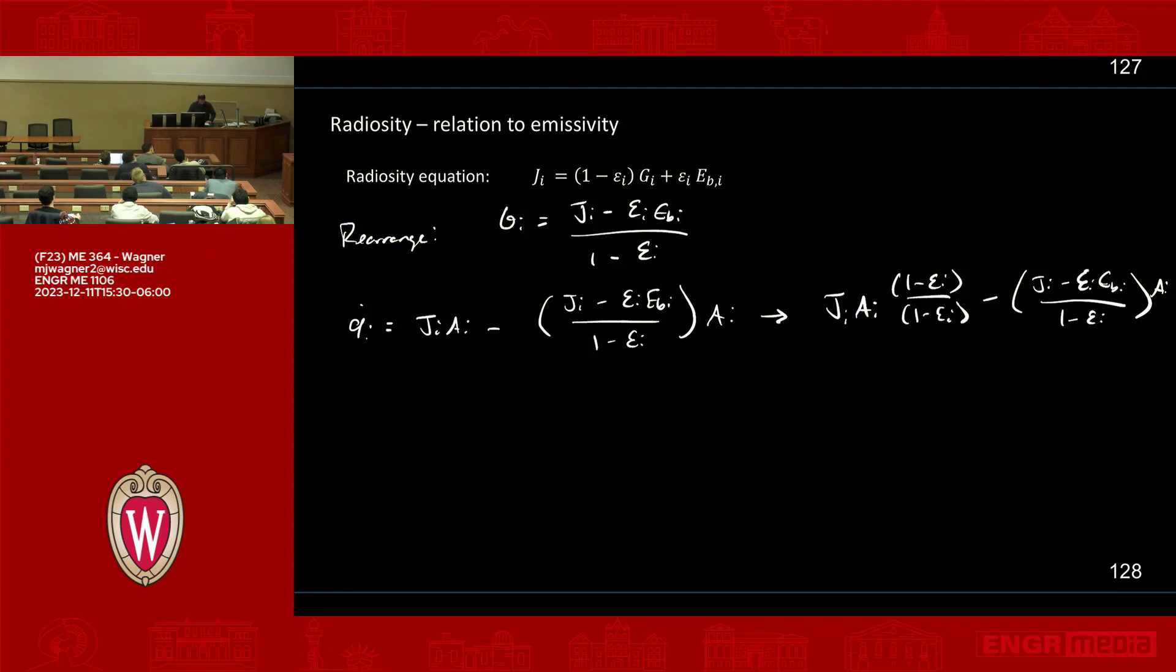And then what we can do is let's write out this expanded equation. So q dot i is equal to the numerator is going to be j i a i minus j i a i epsilon i minus j i a i plus epsilon i a i ebi, all that divided by one minus epsilon i.